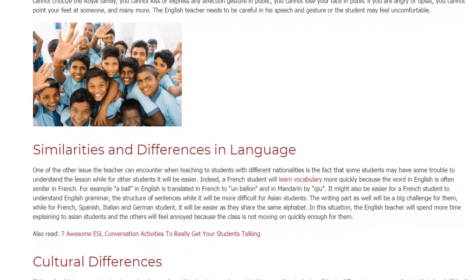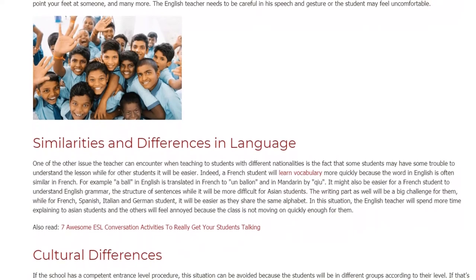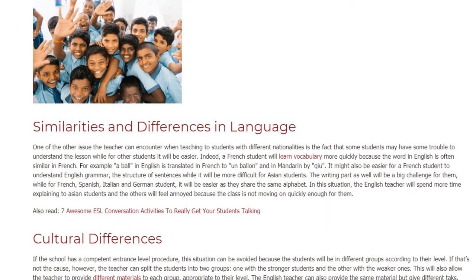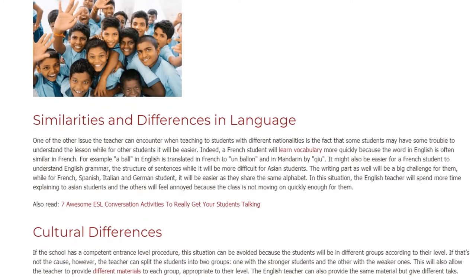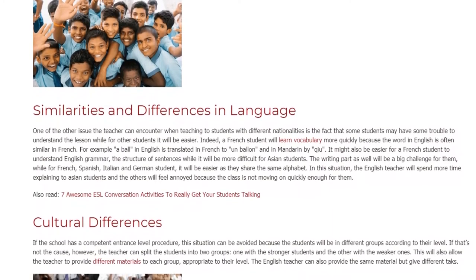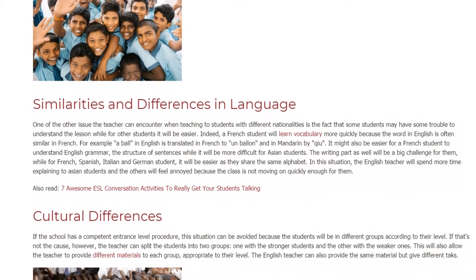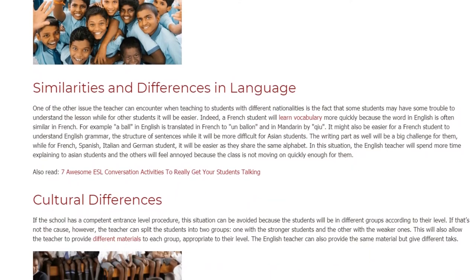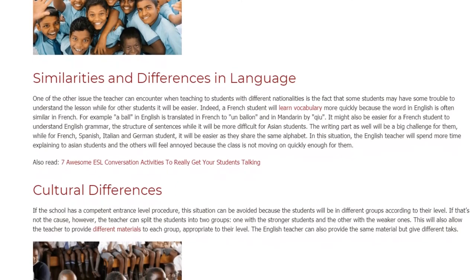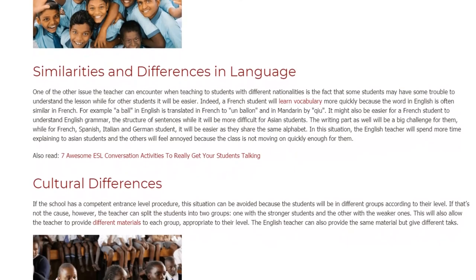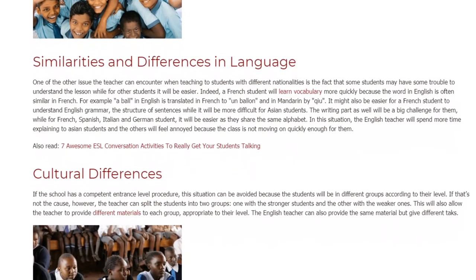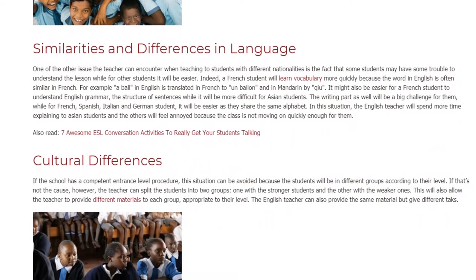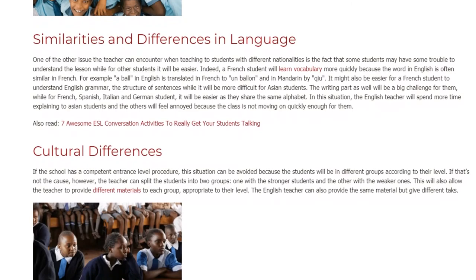Indeed, a French student will learn vocabulary more quickly because words in English are often similar in French. For example, 'ball' in English is translated in French as 'un ballon' and in Mandarin as 'Qiú'. It might also be easier for a French student to understand English grammar and sentence structure, while it will be more difficult for Asian students. The writing part will also be a big challenge for them, while for French, Spanish, Italian, and German students it will be easier as they share the same alphabet.